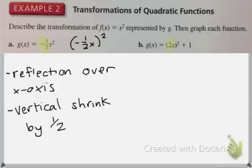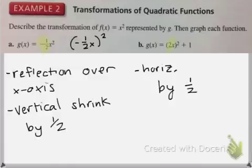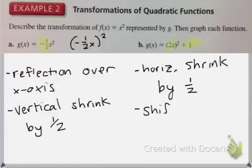Now for b, you can see that this 2 is clearly on the inside, so that suggests a horizontal stretch or shrink. Now remember, for horizontal, you use the reciprocal of what you're multiplying by. So the factor is actually 1/2, and if it's 1/2, that means it's actually a horizontal shrink. Now the other transformation I see is a plus 1 at the end. That's just a shift up 1.